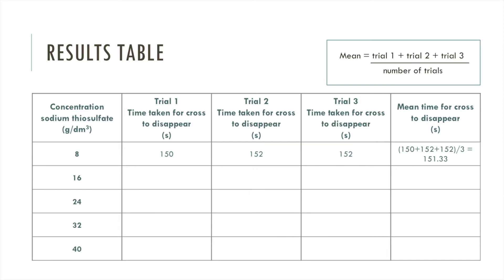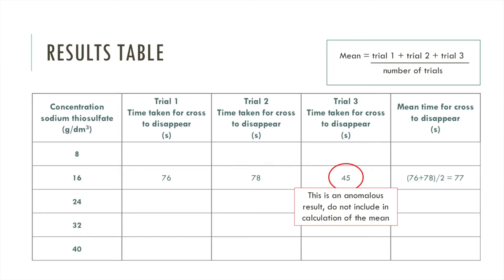Now let's look at another example. Let's say for the 16 grams per decimetre cubed reaction, my results were 76, 78, and 45. This 45 is wildly different to my other two results, and we call this an anomalous result. A result like this suggests you've probably done something wrong in the experiment and it probably can't be trusted, so it should not be included in your calculation of the mean. So for this calculation we would do 76 plus 78 and then divide by 2 because this time we're only including 2 of the trials.